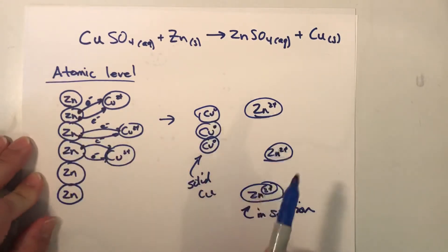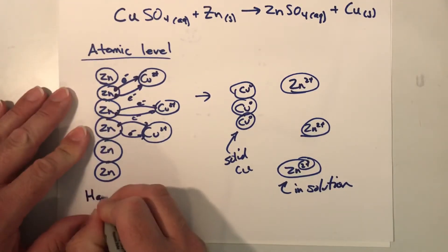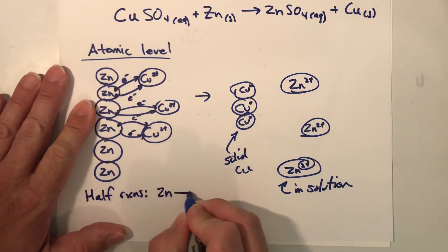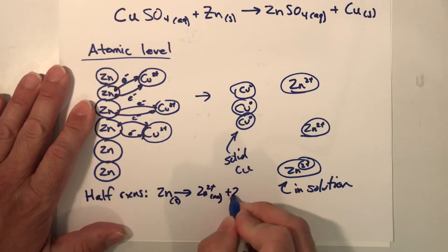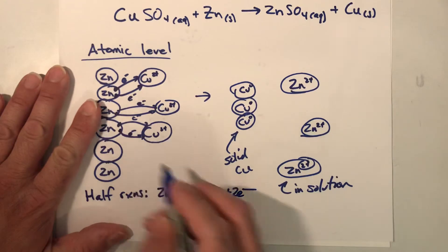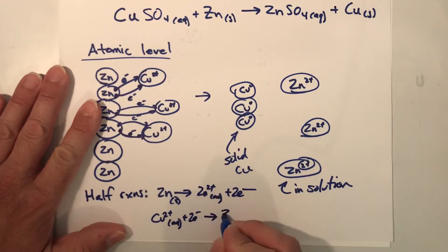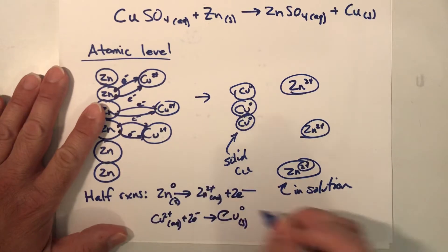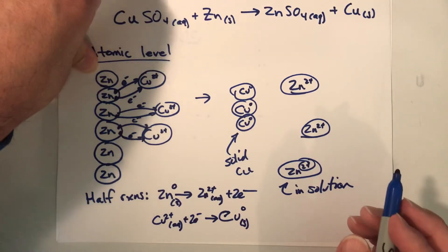That's redox — at the atomic level it's just the transfer of electrons. The copper is getting reduced, the zinc is getting oxidized. We can treat these as separate reactions called half-reactions: zinc is transformed into zinc 2+, giving off two electrons, whereas copper 2+ ions receive two electrons turning into copper zero in the solid state.